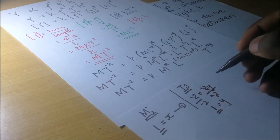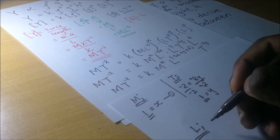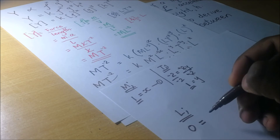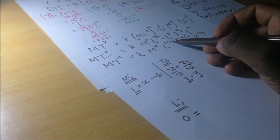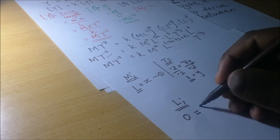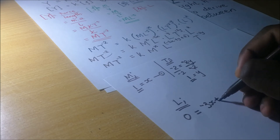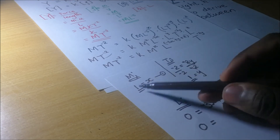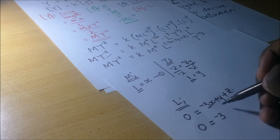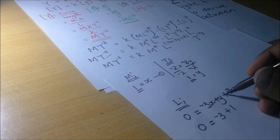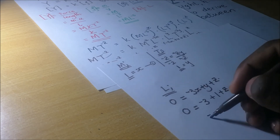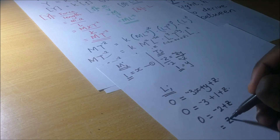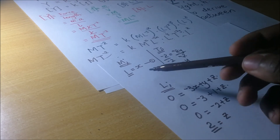For the powers of L: the left side has no L term, so the power is 0. Therefore 0 = −3X + Y + Z. Substituting X = 1 and Y = 1: 0 = −3 + 1 + Z, which gives −2 + Z = 0, so Z = 2.